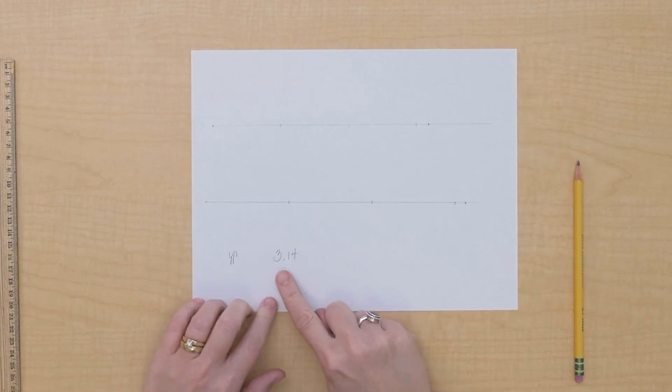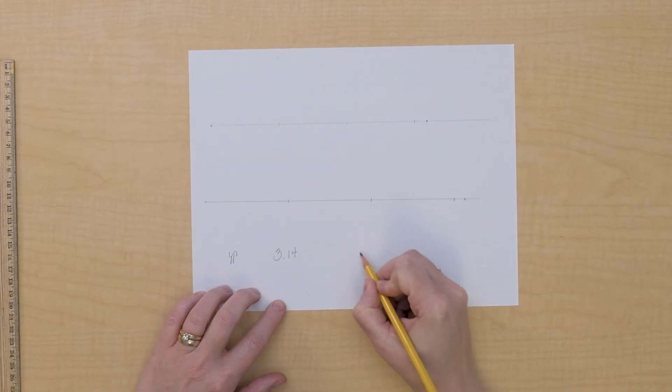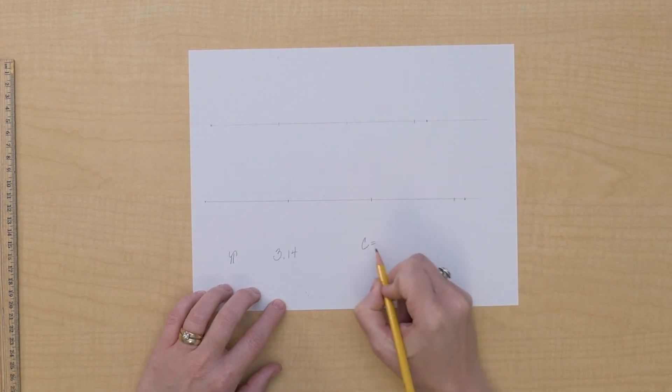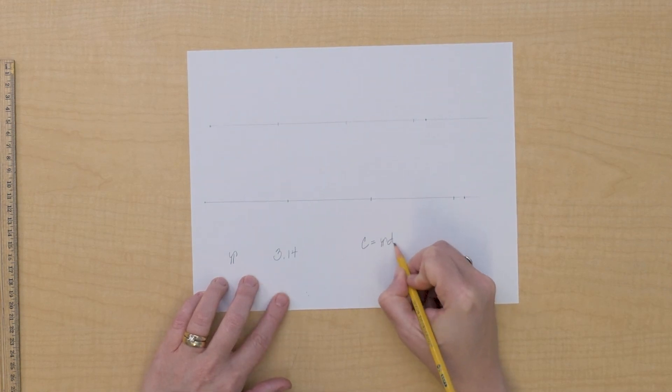So when we use pi for our calculations, we will use this abbreviation of it, three and 14 hundredths. So if we can say that there are three and 14 hundredths diameters to every circumference, we can start to make a formula. That would mean that if we wanted to find the circumference of a circle, we could multiply this three and 14 hundredths pi times the diameter.